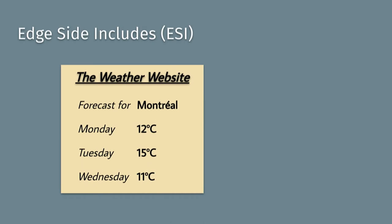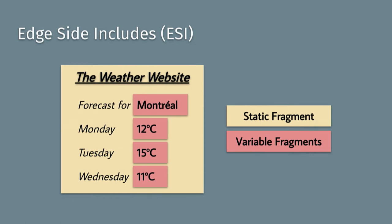How ESI works: imagine a fictive weather website. To the end user it's just a regular HTTP response, but to an ESI-enabled cache server, it's multiple fragments with varying time-to-live values. Labels like Monday/Tuesday/Wednesday are unlikely to change, so you can cache them for months. But the forecast — say 12°C or 15°C — changes within five minutes. So the whole response can be cached with different TTLs per fragment. You can also add conditions: if a certain cookie is set, contact a specific API.